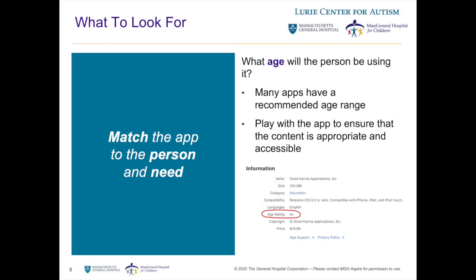Another thing to consider is the age of the person using the app. Most apps will have a recommended age range. You can find this easily by looking at the information page of the app in the app store, where it will have a category called age range. However, we encourage you to still explore the app yourself to make sure it's appropriate for your loved one, as chronological age does not always match developmental age, and these age ranges are generally a rough guideline.